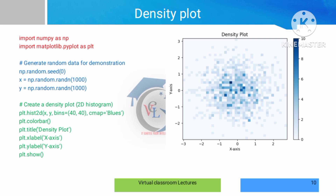Next, we set cmap to Blues for the color. Then we call plt.colorbar — that function adds a colorbar to the plot.